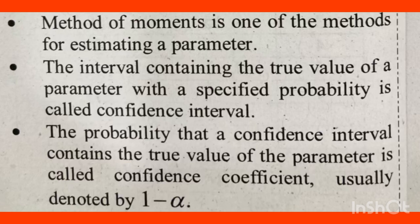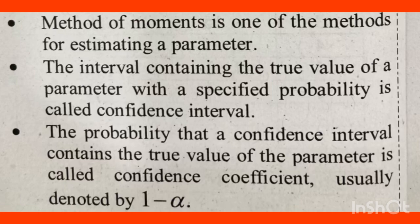The probability that a confidence interval contains the true value of a parameter is called the confidence coefficient, usually denoted by one minus alpha. The true value of the parameter within the confidence interval is associated with this probability — that is the confidence coefficient, expressed as one minus alpha.